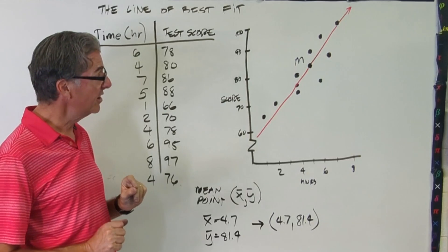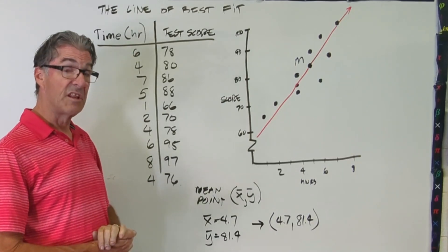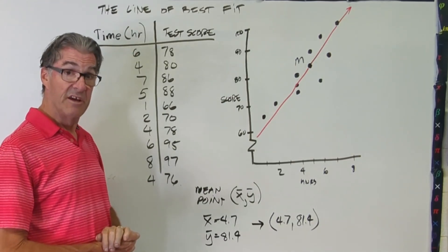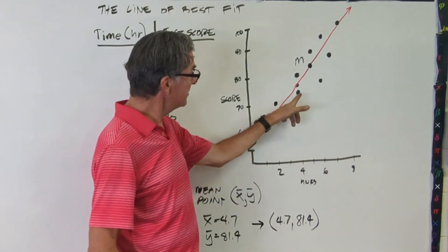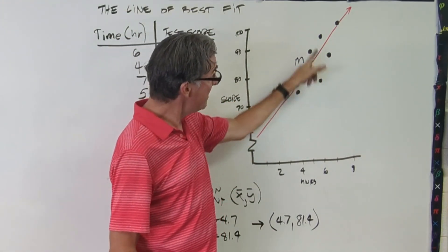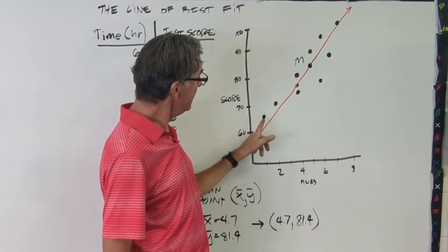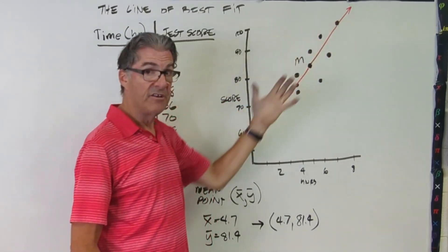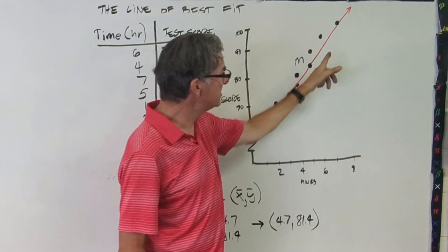And you'll notice that this line should really kind of split the data on both sides. Now, there's a caveat here. The distance from the line matters. So let's take a closer look. You can see that these points are below the line, and they're quite a bit further away from the line than the points on the top.